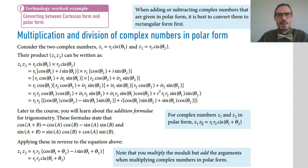For complex numbers, and this is the result you really do need to learn and write down, when you multiply complex numbers in polar form, you multiply the modulus and you add the arguments.